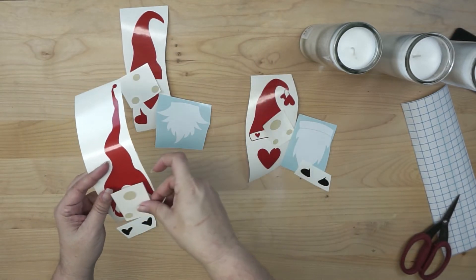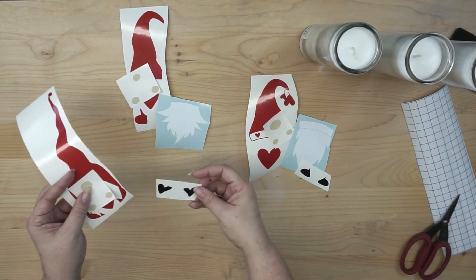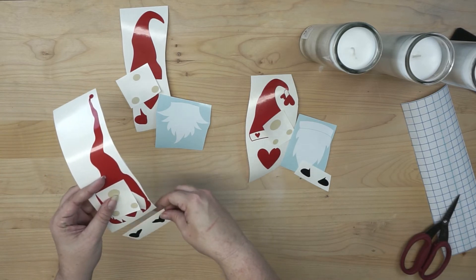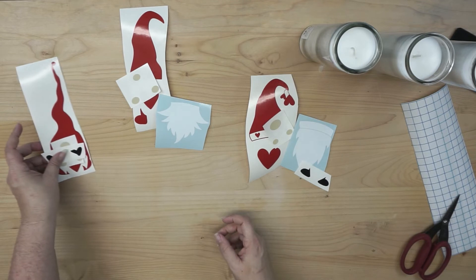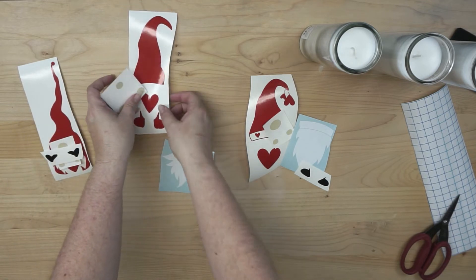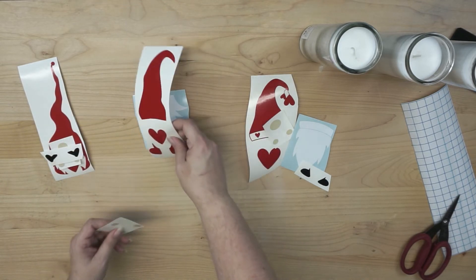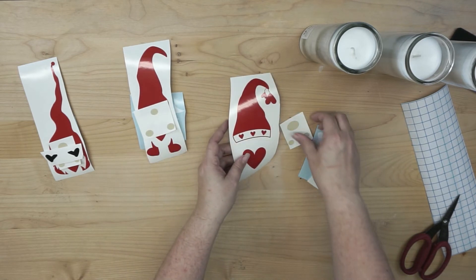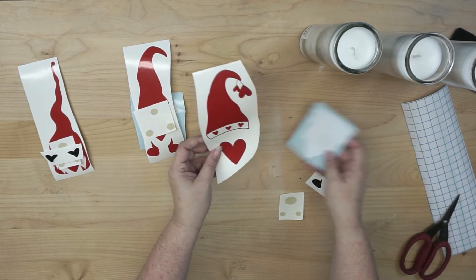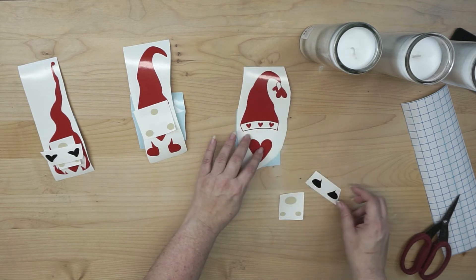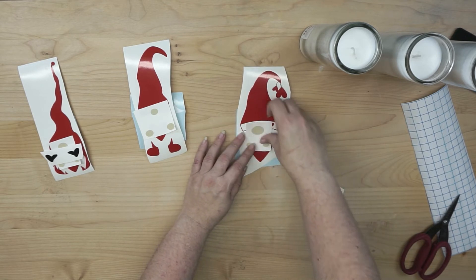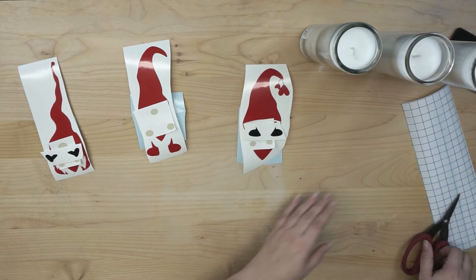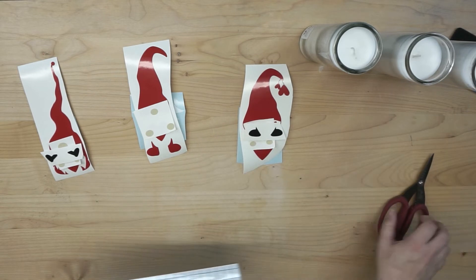And then we'll do the same here. I know that the beard goes on first, then the gnome, then the nose. And then we have the same thing. It'll be the beard, the gnome, the nose, and then we can do the shoes. Alright, so let's talk about how this actually happens.